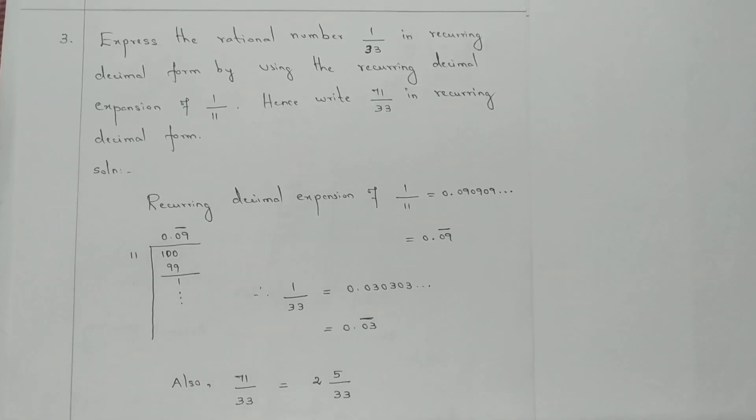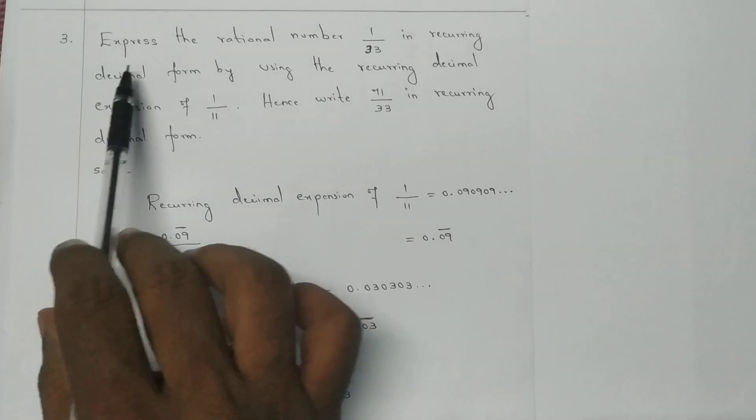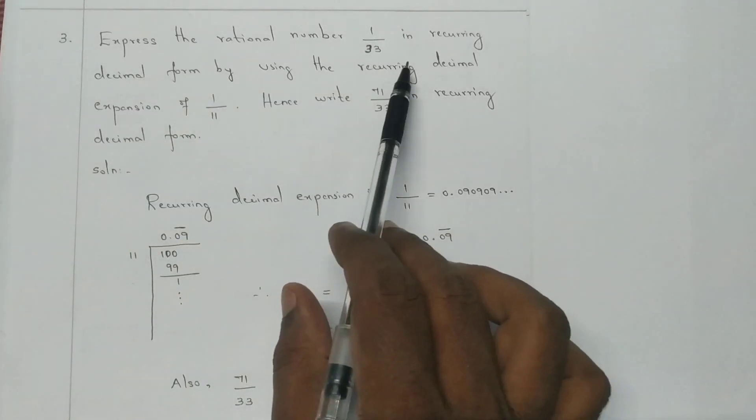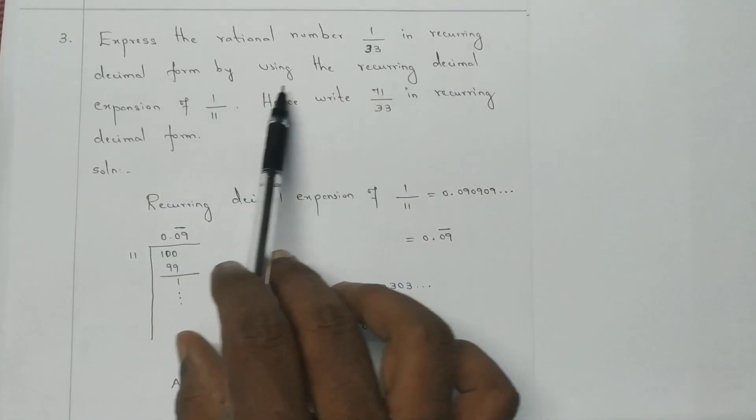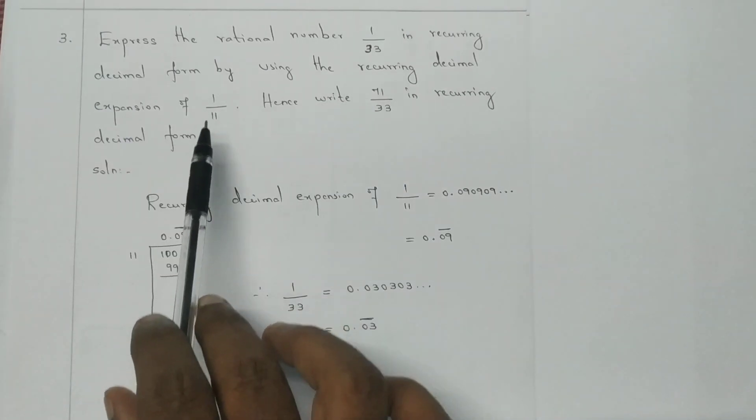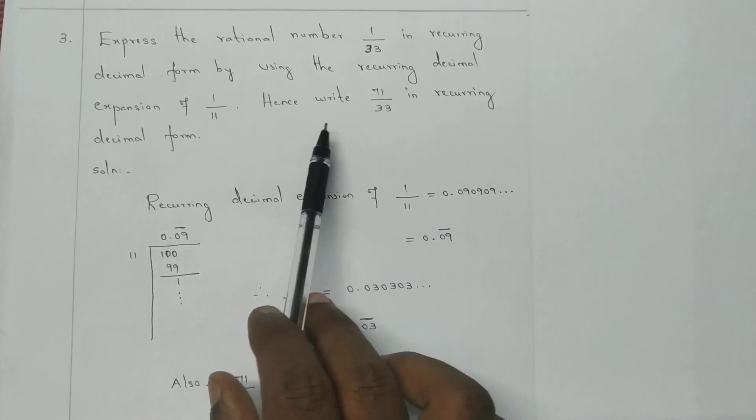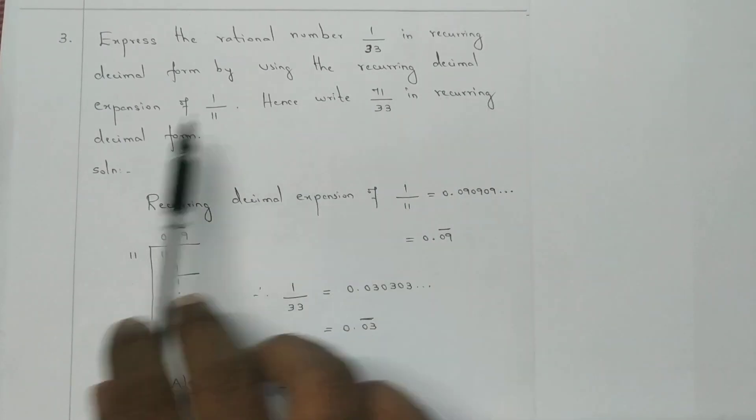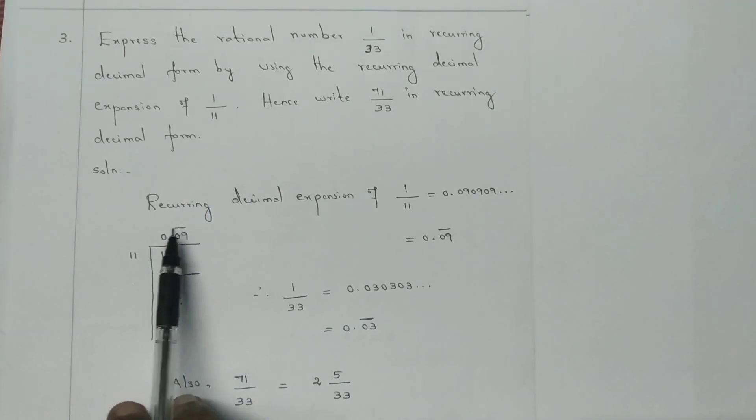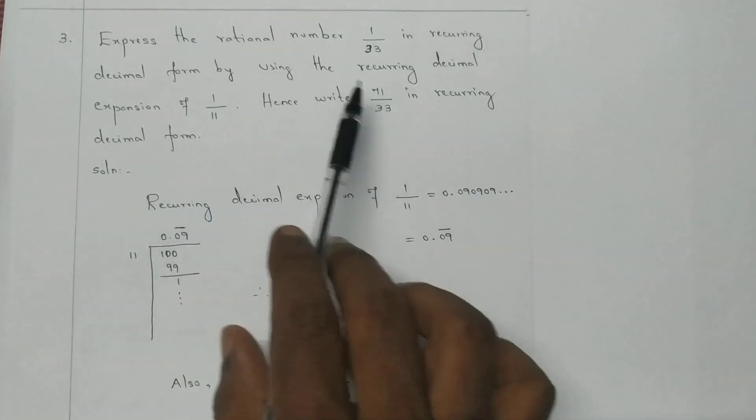Hi students, welcome to SSC Mathematics. Today, 9th standard mathematics class, Chapter 2, Section 2.2, third sum. Express the rational number 1/33 in recurring decimal form by using the recurring decimal expansion of 1/11. Hence write 71/33 in recurring decimal form. First, the recurring decimal form of 1/11.